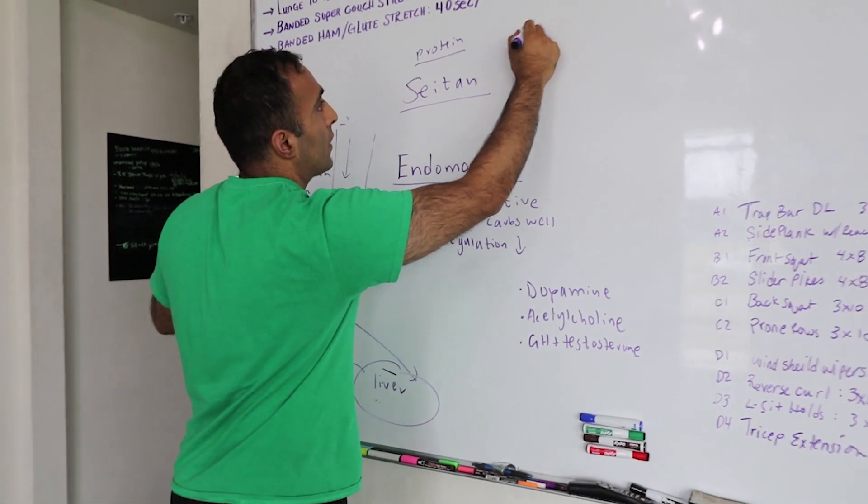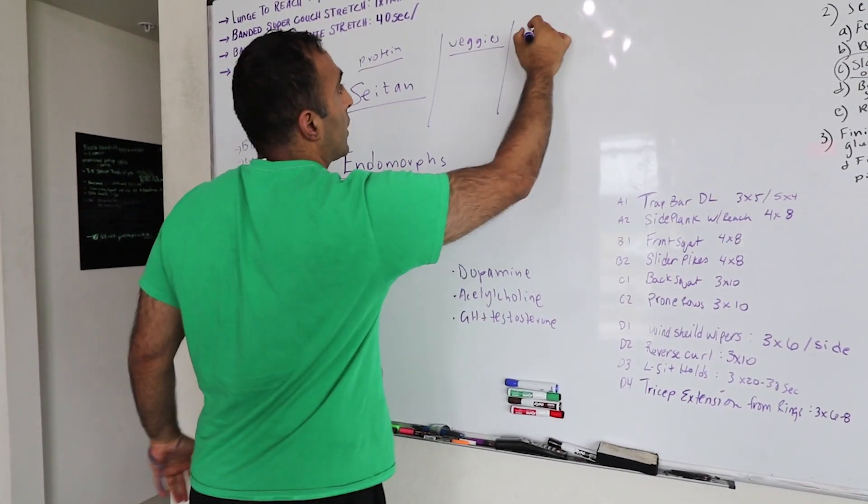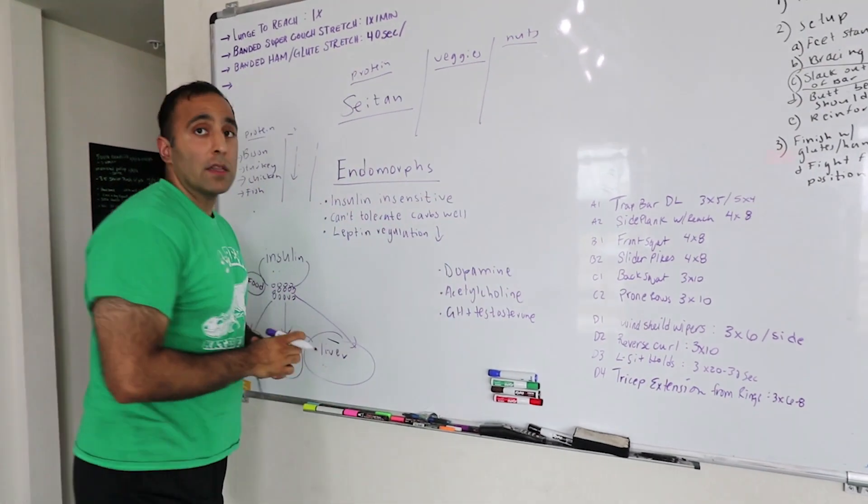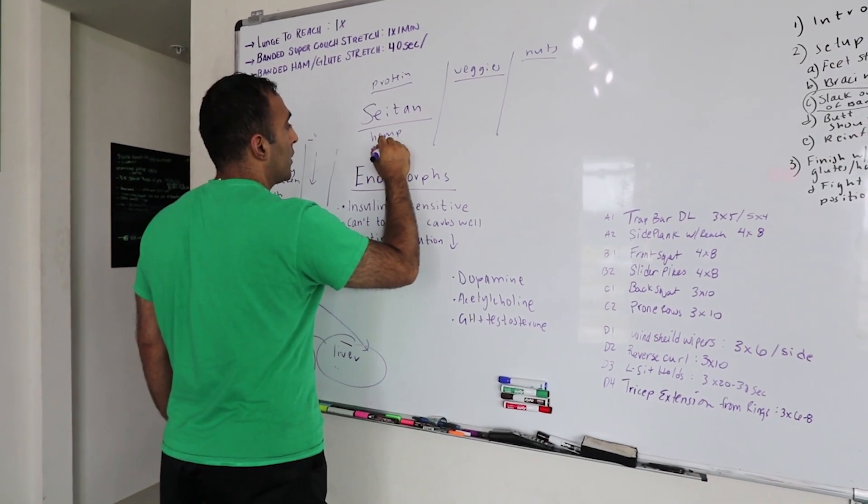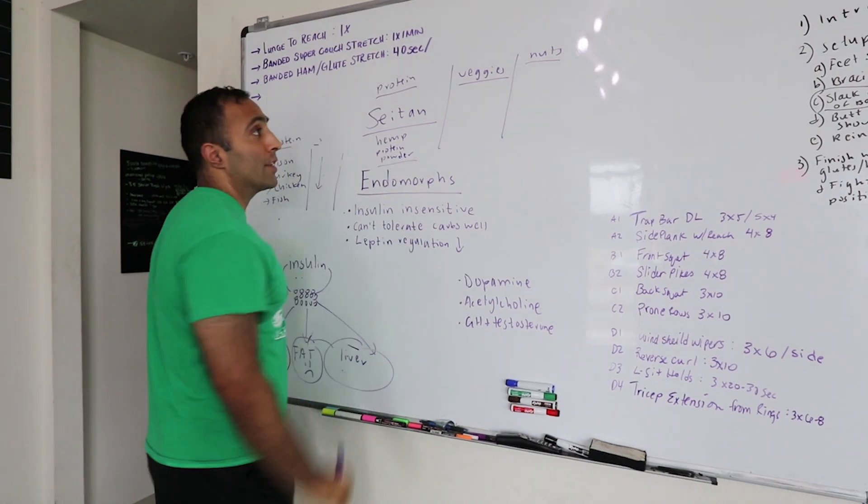Lots of veggies of course that we talked about before, and then some high quality fat from your nuts. If you really want to get a little extra protein in for vegans, you can get hemp protein powder, make a little hemp protein shake, and chow that down as well.